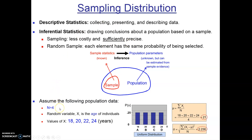Let's take a look at a population of n equals 4 where the random variable we're studying is age. We have persons A, B, C, and D: A is 18 years old, B is 20, C is 22, and D is 24. This is called a uniform distribution because each individual has an equal probability of being selected — 25% with four people. We draw our distribution with probability on the vertical and the variable on the horizontal, with each bar at 25%. We can calculate the mean by adding all ages and dividing by four, giving an average age of 21, and the standard deviation is 2.236.